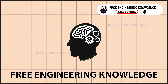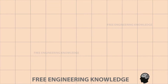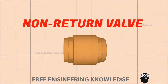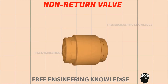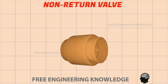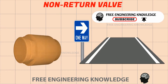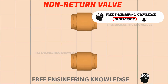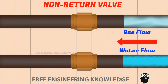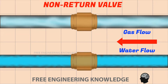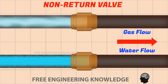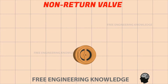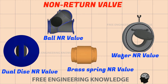Welcome to Free Engineering Knowledge. In today's video we will discuss what is a non-return valve and how it works. An example of this is a one-way road, because it allows any medium passing through it to flow in only one direction. That is why it is also called a one-way valve, and it is also known as a check valve. Non-return valves have several models; their patterns vary according to the medium and the pressure passing through them.